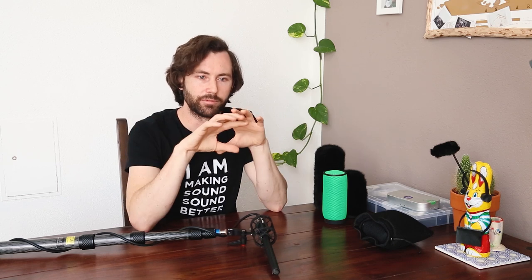Conversely, the omnidirectional mic is a sealed unit at the diaphragm. It contains pressure inside the capsule and the back plate, and it measures the pressure all around the mic, causing those two objects to interact and create voltage differences.